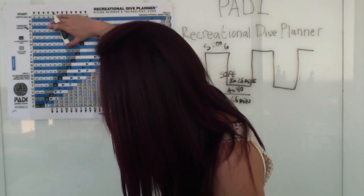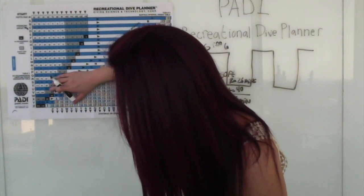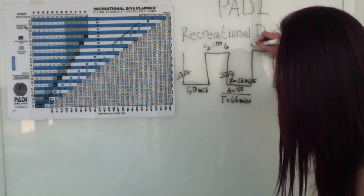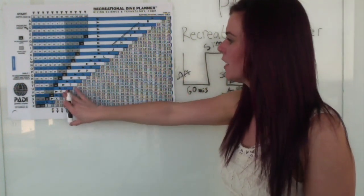So our new pressure group, looking at these two numbers, 50 feet for 66 minutes is new pressure group U. So we go to U.